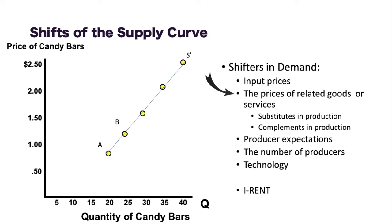Price of related goods looks at substitutes and complements in production. Milk and cheese would be complements in production. Chicken meat and eggs would also be complements in production. Black markers and red markers are substitutes in production, and jalapenos and beans would be substitutes in production. If there's a fall in substitute production, supply will increase. A rise in substitute production means supply will decrease. A rise in complement production means supply will increase, and a fall in complement production means supply will decrease.